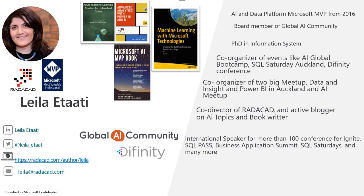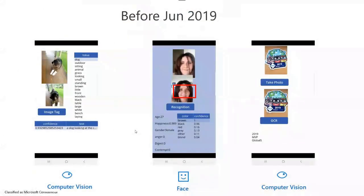I'm going to talk about form processing using AI. But first, let me go through what we have about doing AI in Microsoft Power Automate and Power Apps, and how we can use them combined with Power BI. Before June 2019, if you wanted to create an application with Microsoft Power Apps — a low-code, no-code tool for creating smart applications — you could combine it with Microsoft Cognitive Services. These are applications I created.